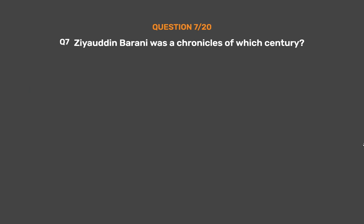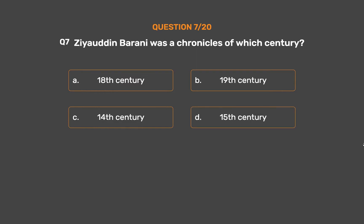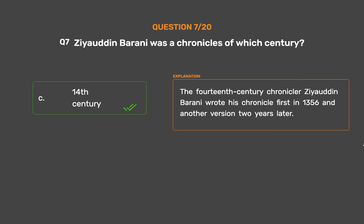Question 7: Ziauddin Barney was a chronicler of which century? Option A: 18th century. Option B: 19th century. Option C: 14th century. Option D: 15th century. The correct answer is Option C: 14th century. The 14th century chronicler Ziauddin Barney wrote his chronicle first in 1356 and another version two years later.